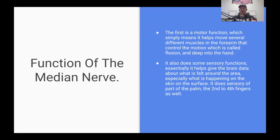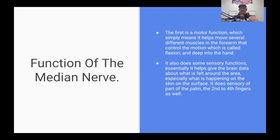What is the function of the median nerve? It is both motor and sensory. Motor function simply means that it helps move several different muscles in the forearm that control flexion, and deep into the hand. It also does some sensory functions — essentially it gives the brain data about what is felt around the area, especially on the skin on the surface. It provides sensory input to part of the palm and the second to fourth fingers as well. So it is a mixed nerve, both motor and sensory.